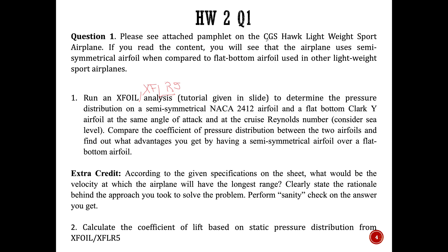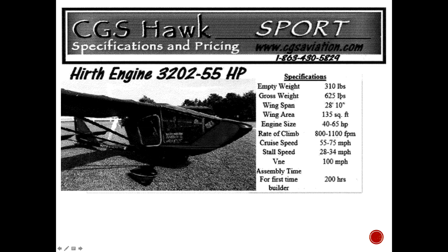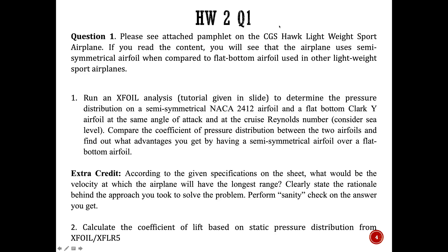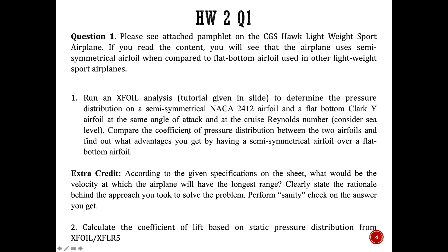The CGS Hawk is a type of airplane I came across at an airplane festival in Dayton. It's a very lightweight experimental airplane — the entire airplane weighs like 600 pounds, gross weight around 625. It's so lightweight that you can almost float in air with a 15-knot headwind. The entire airplane costs about $2,500.